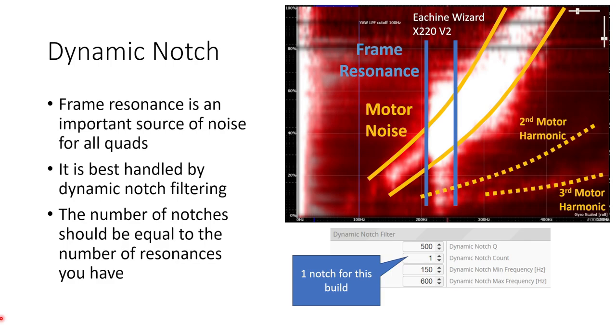The second main source of noise in most quads comes from frame resonance. Now frame resonance looks like this sort of vertical stripe on your frequency versus throttle plot and frame resonance is best handled by dynamic notch filtering. What dynamic notch filtering does is it preferentially targets a particular frequency where there's a lot of noise and attenuates it.